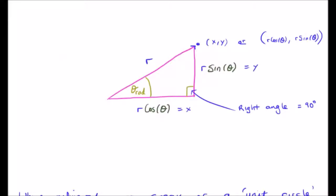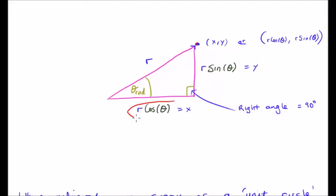We can view this graphically, where we define the hypotenuse as R. Any point on the circle can be described as having an x-coordinate and a y-coordinate. The opposite side is R times sine theta, which corresponds to the y-coordinate. And R times cosine theta corresponds to the x-coordinate. Because of this, we can substitute in for x and y, giving the coordinate as cosine theta and sine theta.